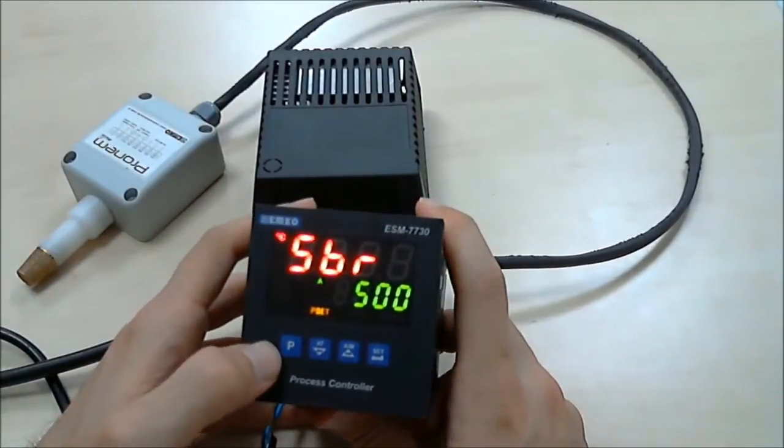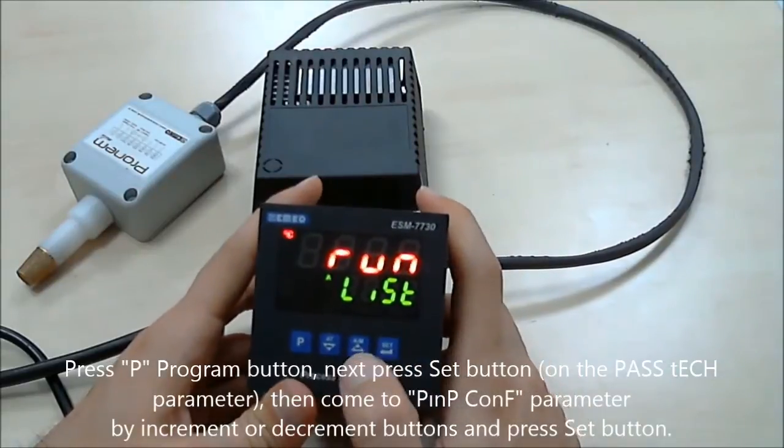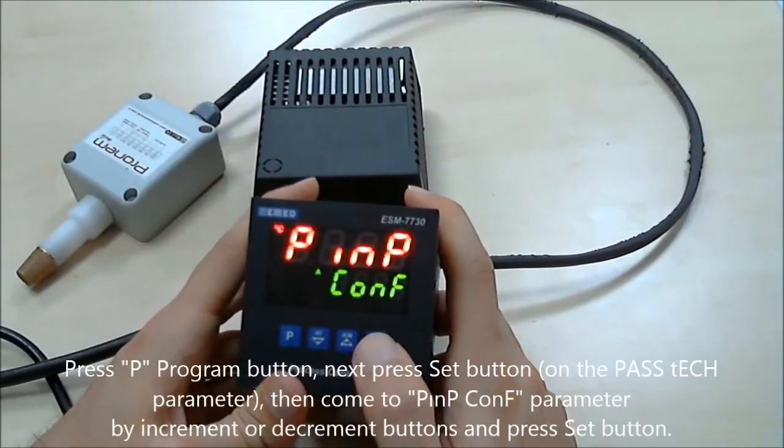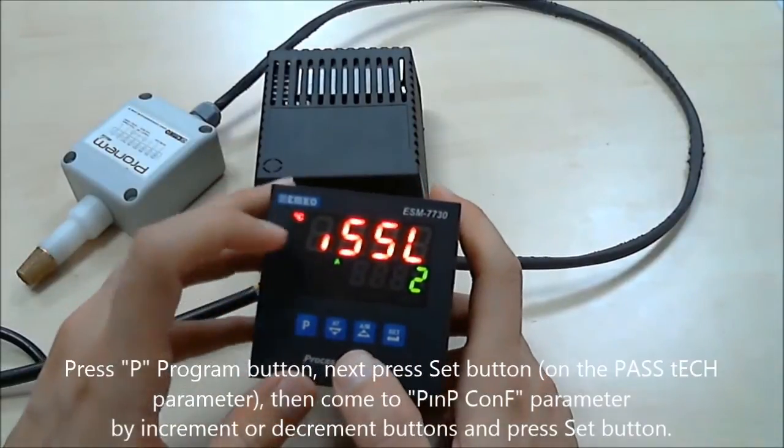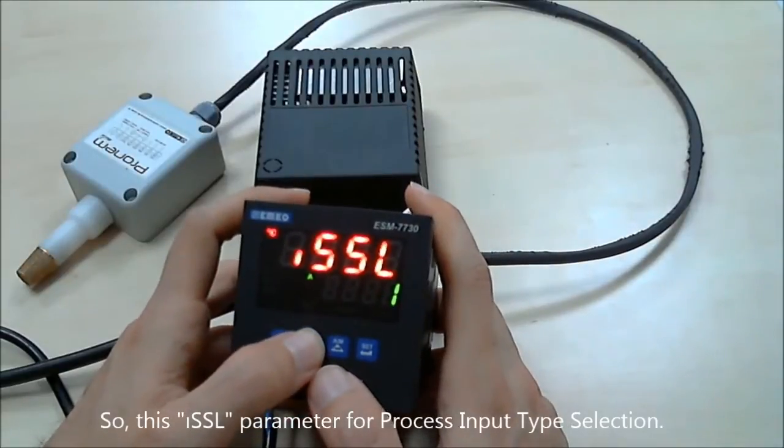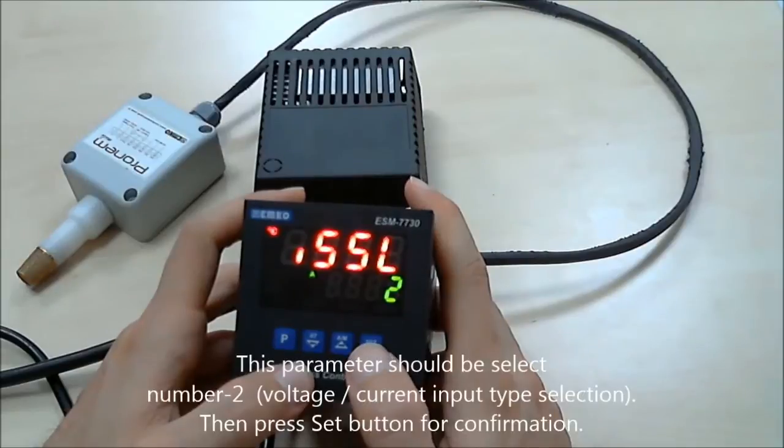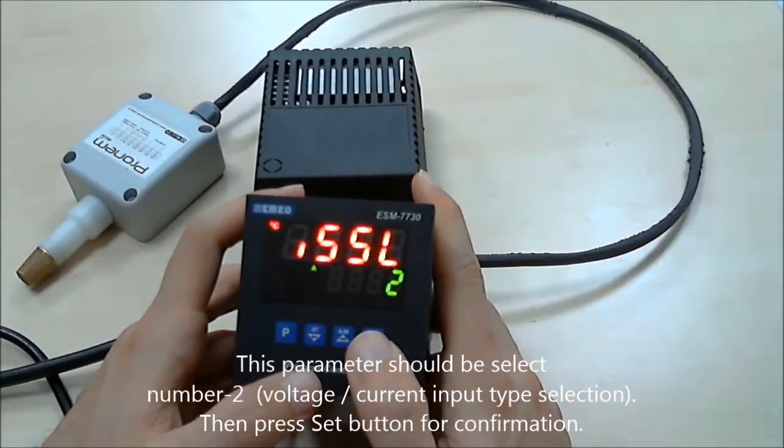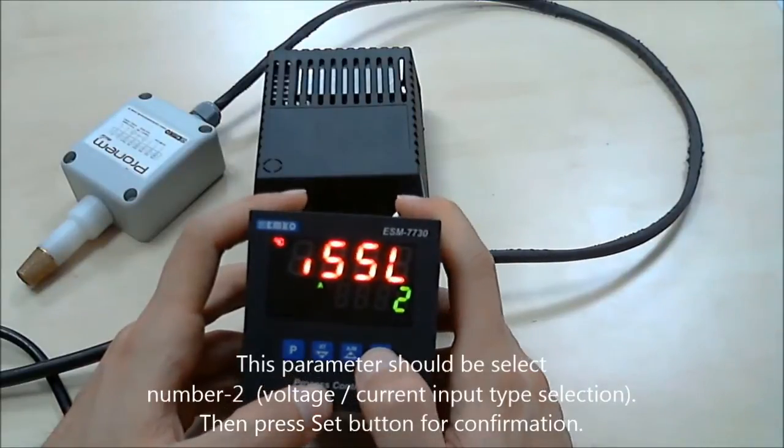Press the program button and press set button. Using increment or decrement buttons, come to the P input configuration parameter. This parameter is for process input type selection. This should be selected as number 2. Number 2 is for voltage current input type selection. Press set button for confirmation.